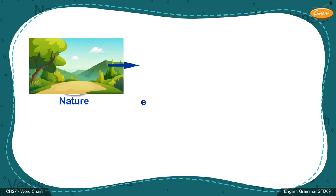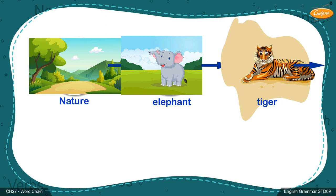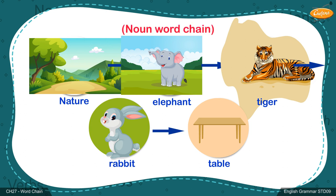Let us do this activity: nature, elephant, tiger, rabbit, table. It is a word chain formed by using nouns only. It is different from word register.